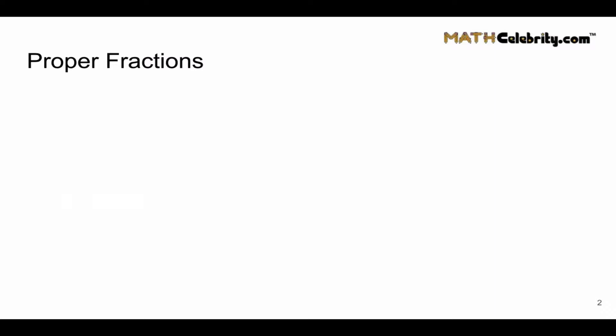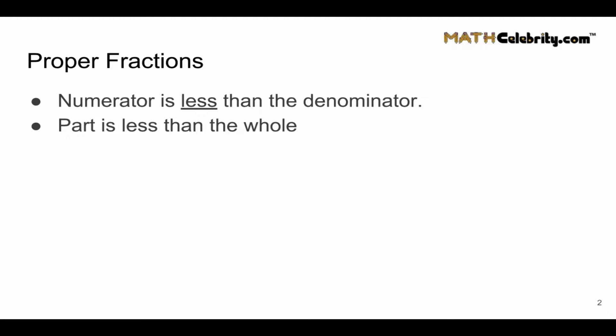Let's first look at proper fractions. The numerator is less than the denominator. This is how you identify a proper fraction. Or stated in other terms, the part is less than the whole. We call these proper fractions because these are the usual fractions we see in word problems such as three-sevenths of a pie or five-sixths of an hour.